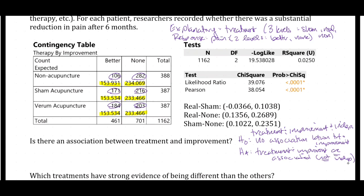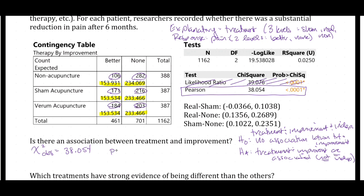We already have the JMP output. Pause this video and circle the correct chi-squared statistic and the correct p-value for this test. The correct chi-squared statistic is the Pearson chi-squared statistic and the correct p-value is the p-value for the Pearson chi-squared statistic. We do not use the likelihood ratio test for this class. Our chi-squared statistic, χ²_obs, is 38.054, with a p-value of less than 0.0001.